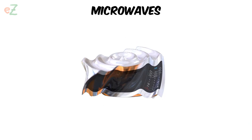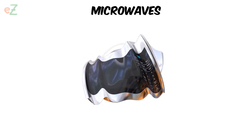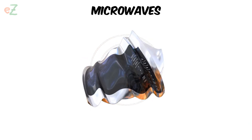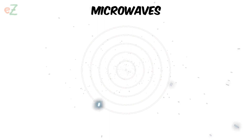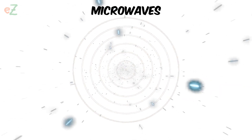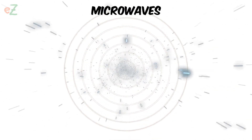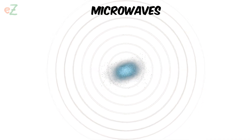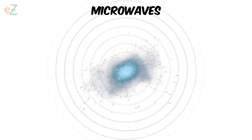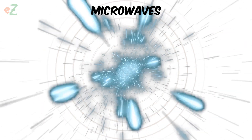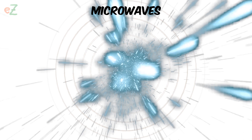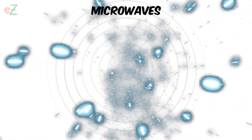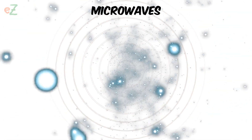Microwaves. Part of the electromagnetic spectrum. These waves of energy are made by stars, the clouds of gas between stars, and supernovae. There is also something called cosmic microwave background radiation. It's all over the universe, and scientists study it to learn how the universe began.